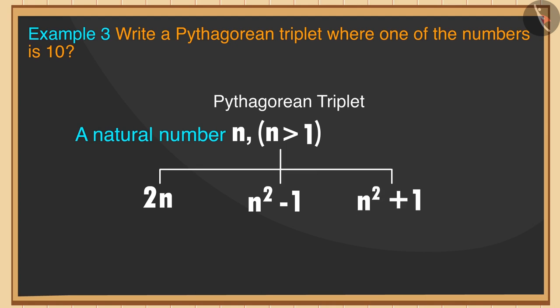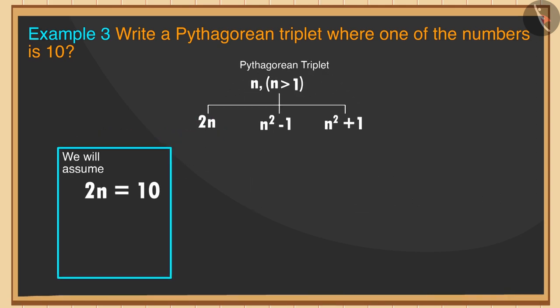We know that for any natural number n greater than 1, we have 2n, n² - 1, and n² + 1 forms a Pythagorean triplet. We will assume 2n equals 10, which makes the value of n equal to 5.